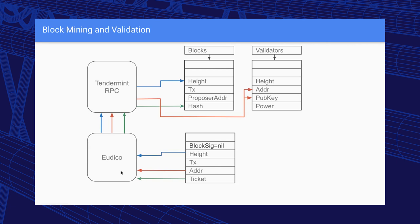The ticket field — normally used as proof of a leader in expected consensus — is repurposed here to store the TenderMint block hash, since we don't use it in the delegated consensus model.